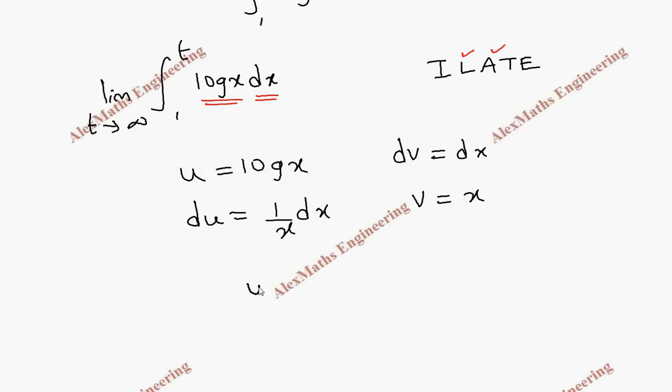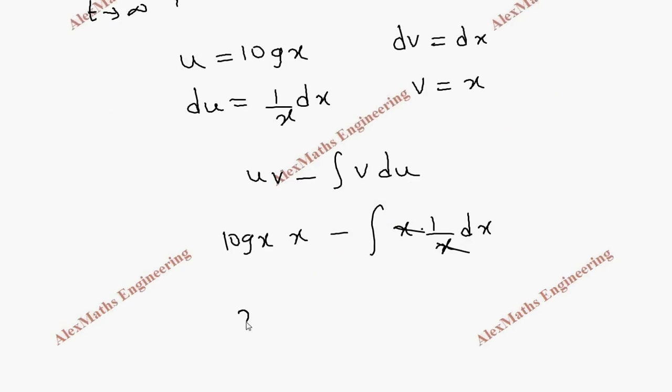Now the formula is uv minus integral v du. So u is log x, v is x, minus the integral of x times 1 over x dx. So we can cancel these two. Now the first term is x times log x minus the integration of dx is x.